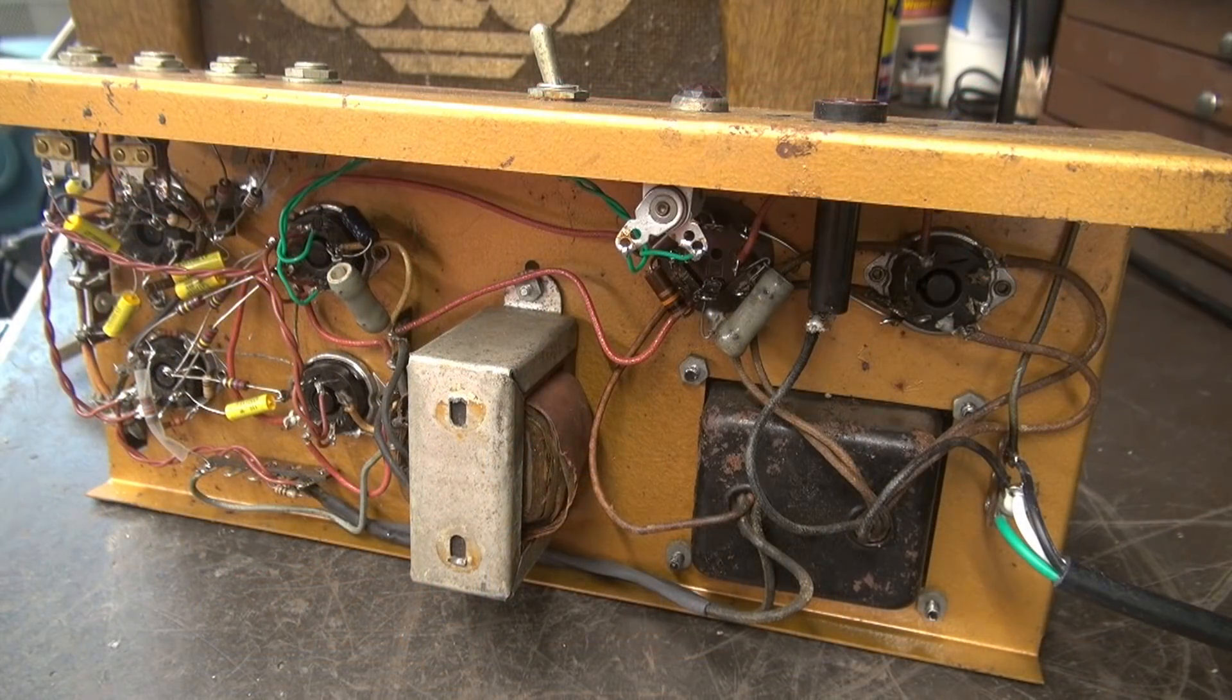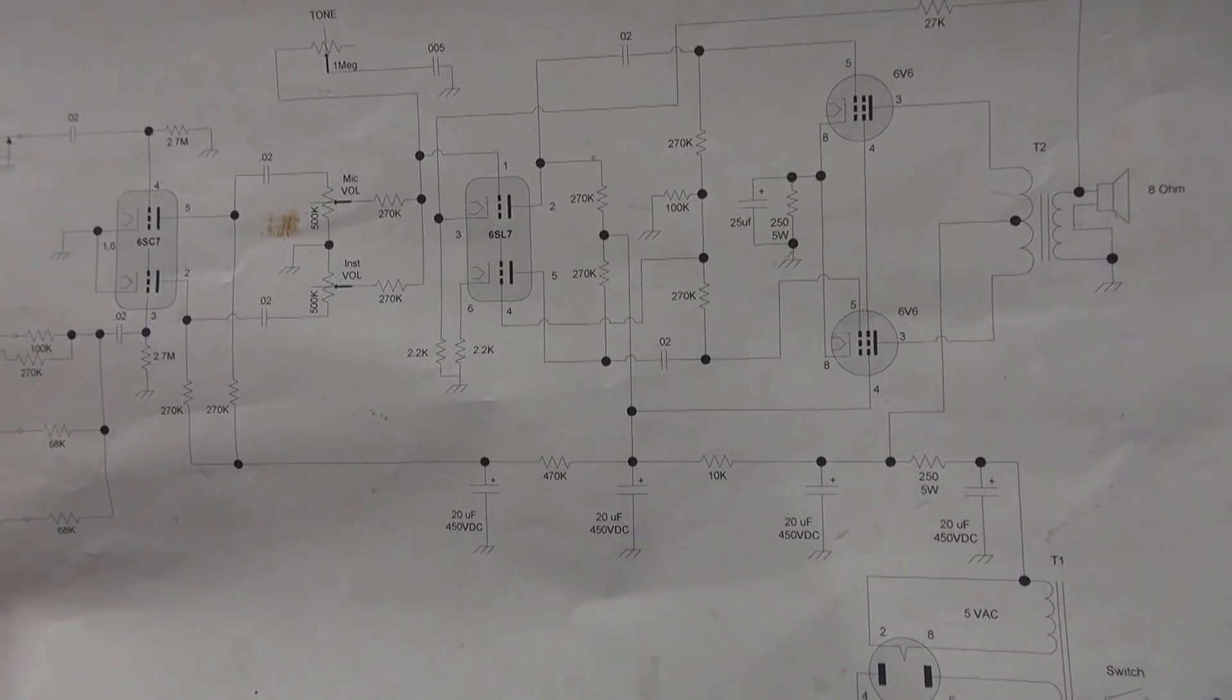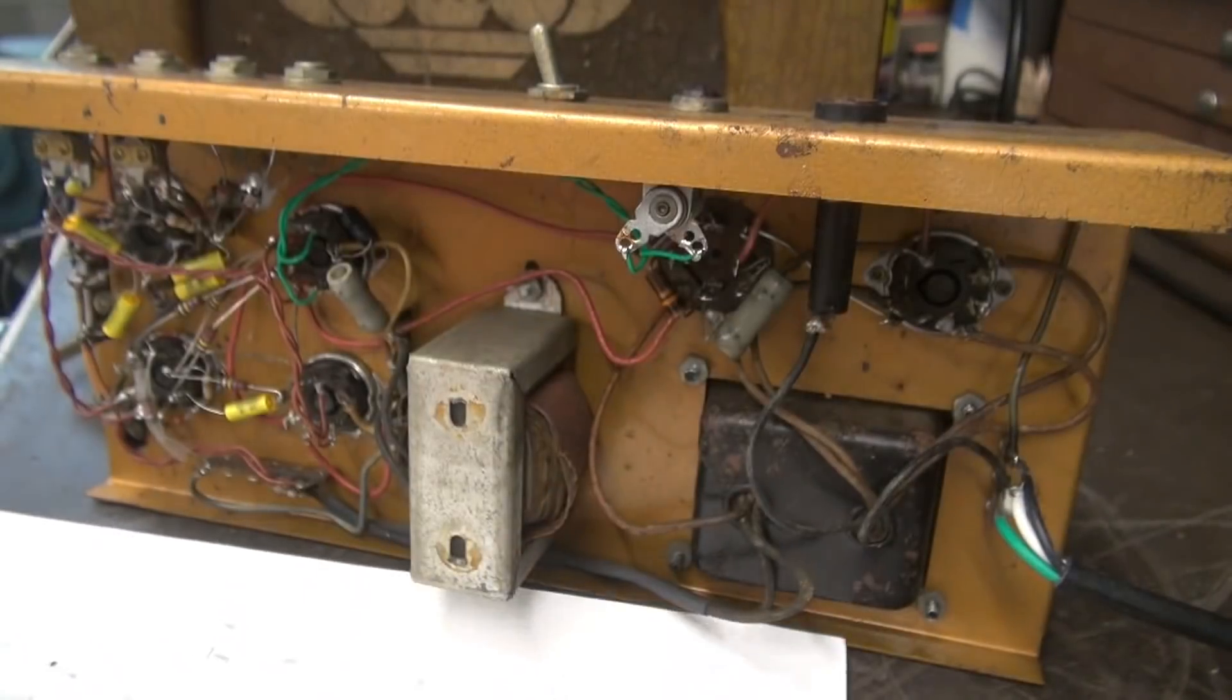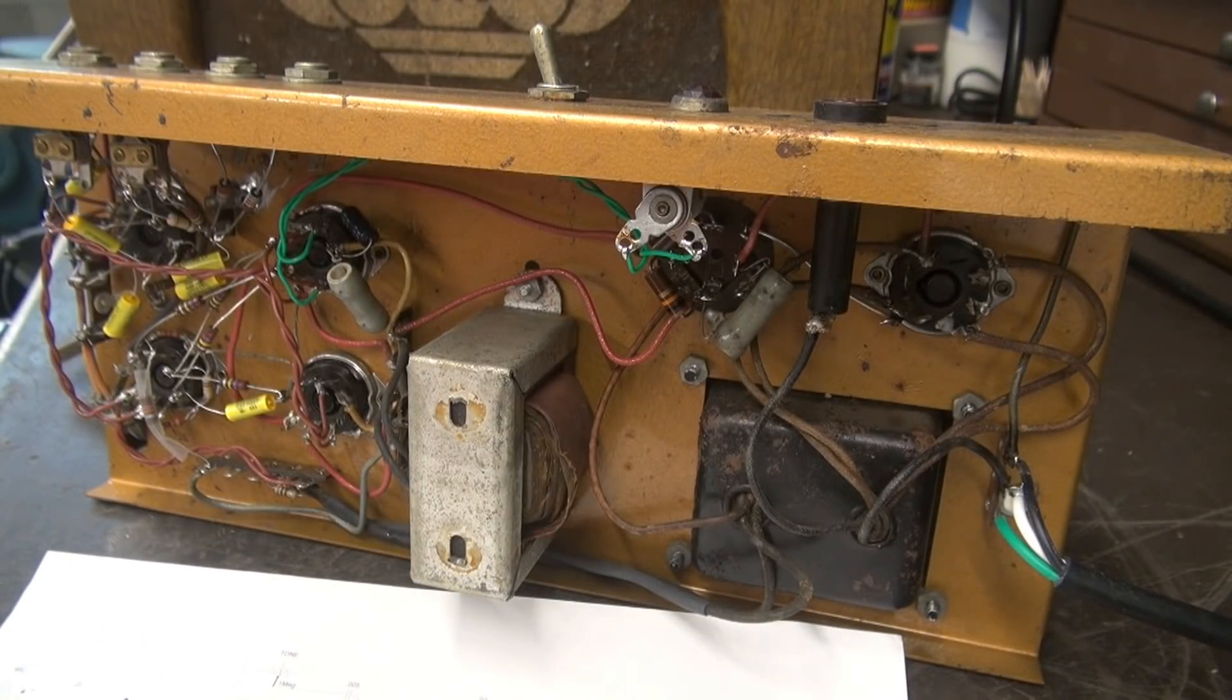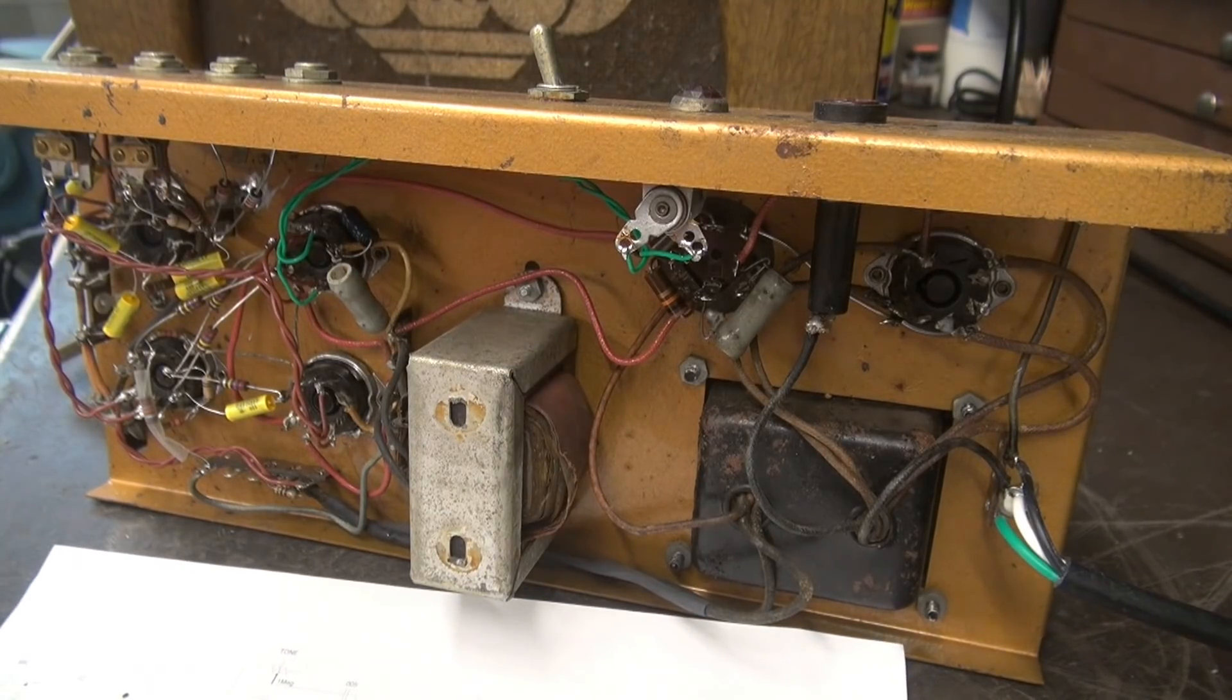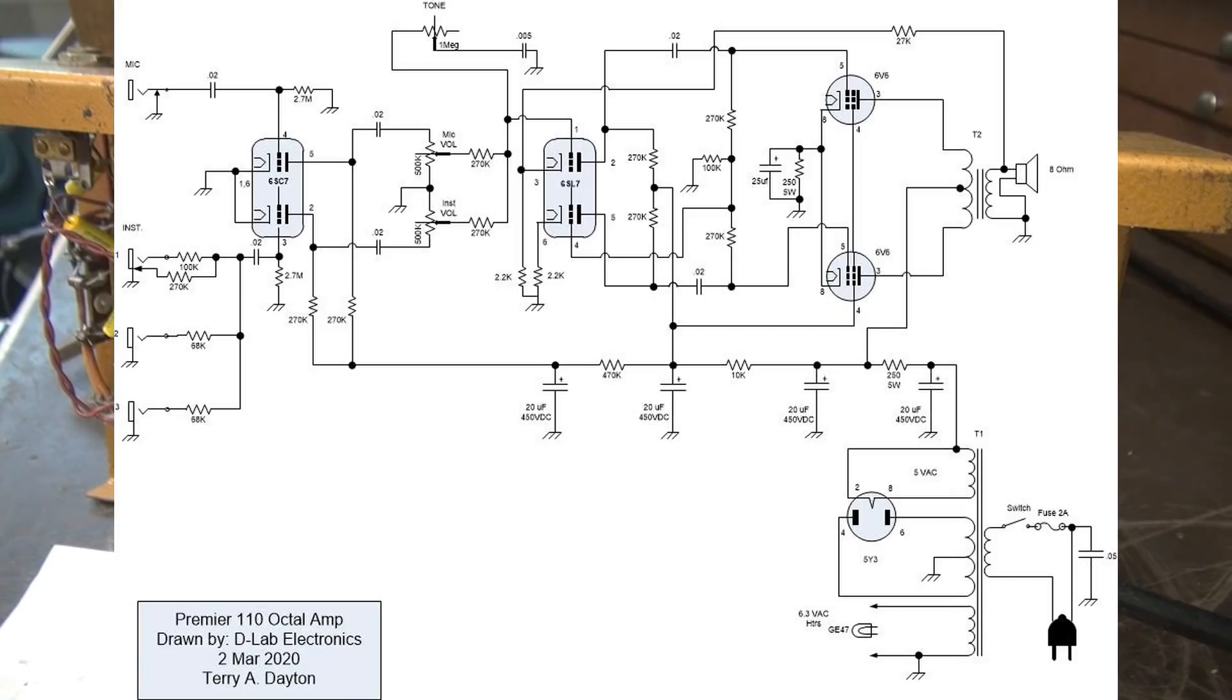So I have the Premier 110 amplifier wired as it was stock per the schematic diagram that I believe is correct. But one thing I noticed was when I was testing it, injecting in audio from my audio generator, it does not have near the gain that a guitar input would need. This amp might have been great maybe as a PA amp or a harmonica type amp. I'm not sure what they used it for back in the day. But it's definitely lacking gain. I know you collectors want them original and it is at this point. So here is the original schematic. I'll post that for your review. If you would like a copy of this schematic, email me and I'll send you that as a JPEG file.